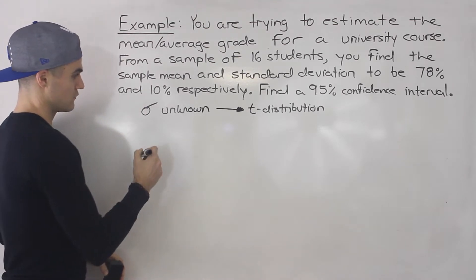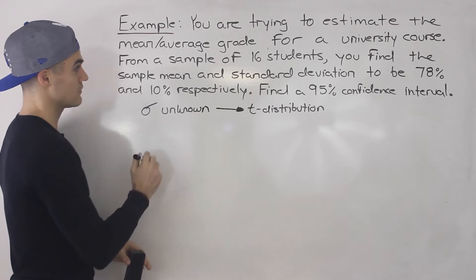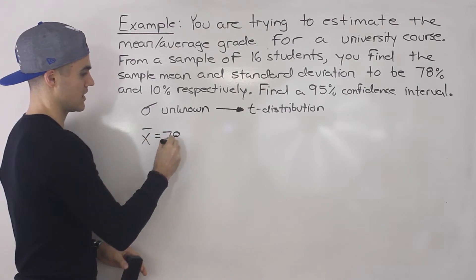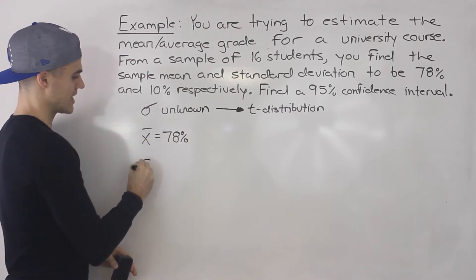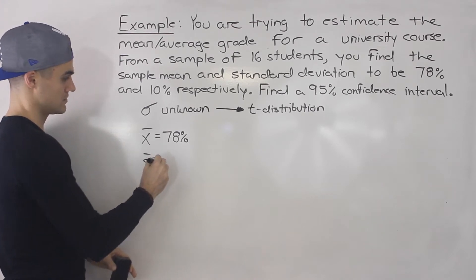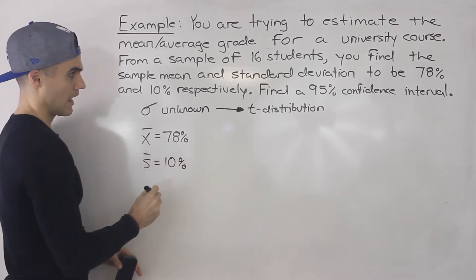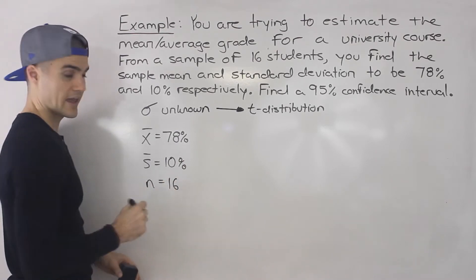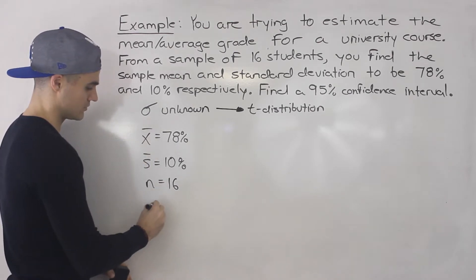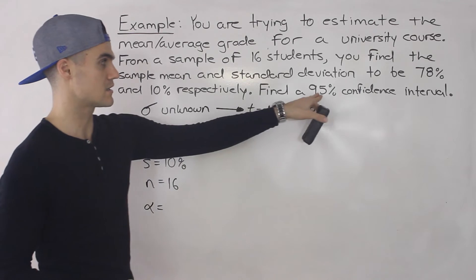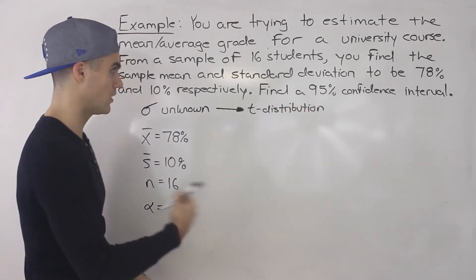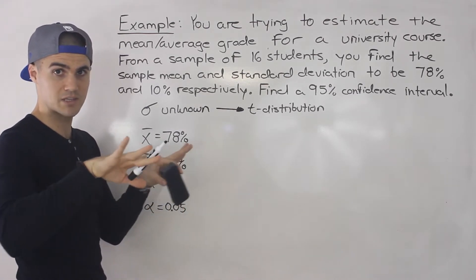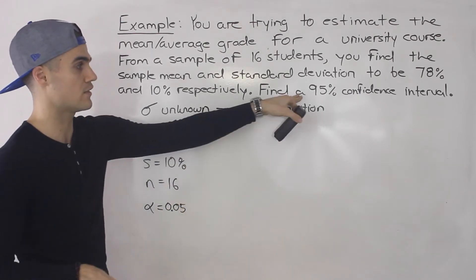First thing I like to write down is what I have. We're given the sample mean x-bar, which is 78%. The sample standard deviation is given as well, that's 10%. And then the sample size is 16. And if you remember from the previous video, I introduced alpha, which is 1 minus the confidence percentage. So 1 minus 0.95 gives us 0.05 — basically the likelihood that the population estimate is going to fall outside of this confidence interval.